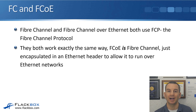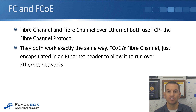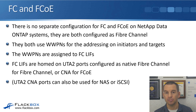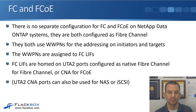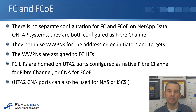Next, let's look at Fibre Channel and Fibre Channel over Ethernet — FCoE. Both Fibre Channel and FCoE use FCP, the Fibre Channel Protocol. They both work exactly the same way. FCoE is Fibre Channel — it's just encapsulated in an Ethernet header to allow it to run over Ethernet networks. Because of that, there's no separate configuration for Fibre Channel and FCoE on ONTAP systems; they're both configured as Fibre Channel. They both use WWPNs for addressing on the initiators and targets and use the same fabric login process. The only difference is FCoE is on Ethernet ports; Fibre Channel is on native Fibre Channel ports.